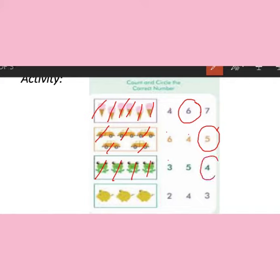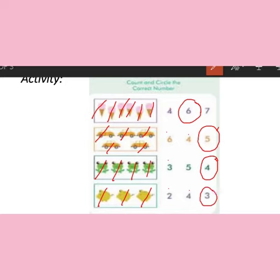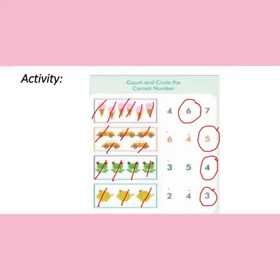In the last picture there are pigs. Start counting the pigs: one, two, three. How many are there? Three. Where is number three? Is it number three? No, it's two. Is it number three? No. Is it number three? Yes, it is number three. So I have circled it.